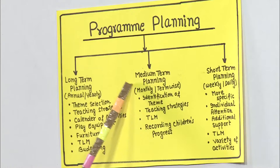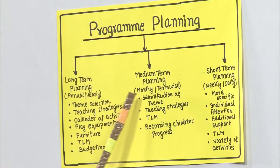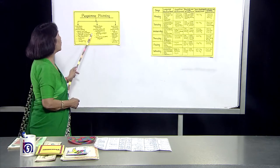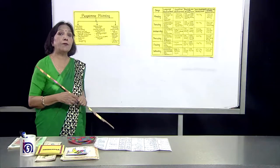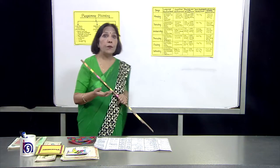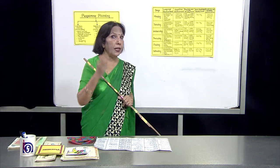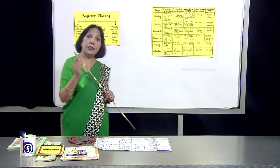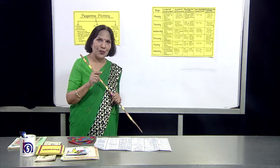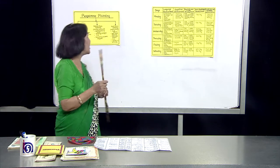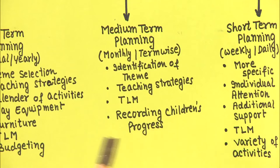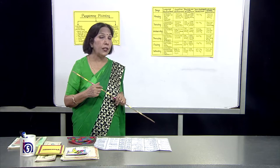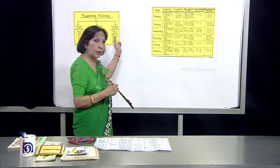Now we come to medium-term planning. This is monthly or term-wise planning, covering three months. Here we have to identify the theme — what themes we are going to take in three months, what will be the teaching strategy, and what TLM we are going to use for those themes. Recording children's progress is also very important and we decide this over the three months.